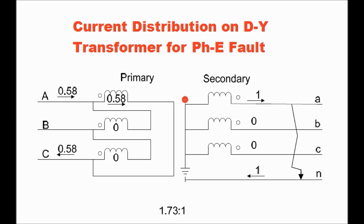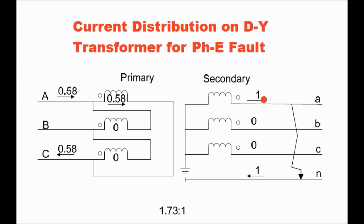The next case study is fault current distribution in a delta-star transformer for a single-phase to earth fault occurring in the star side. Let us consider a single-phase to earth fault in the red phase, and for ease of calculation let the fault current be 1 ampere. So 1 ampere flows in the red phase winding toward the fault point, goes to ground, flows back through the neutral which is grounded to earth, and returns to the red phase winding.